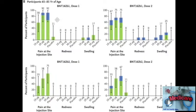If we look in the older population, 65 to 85, once again, in vaccine number two, there seemed to be less side effects than in vaccine number one. And once again, the biggest problem was pain at the injection site, but in terms of redness and swelling, we didn't see much there.